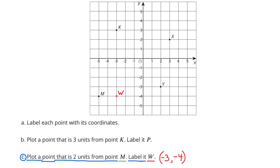Part C: Plot a point that is 2 units from point M and label it W. Again, there are a lot of choices, but the one I came up with was negative 3 and negative 4 — that's 3 to the left along the x-axis and 4 down along the y-axis.